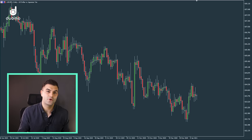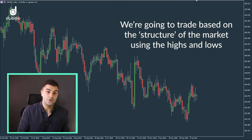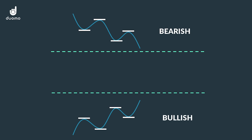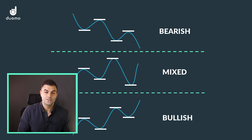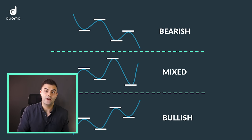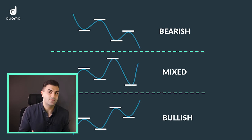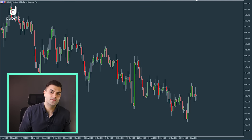So in this simple approach, we're going to trade based on the structure of the market using the highs and lows. If there are lower highs and lower lows, we're in a bearish trend; if there are higher highs and higher lows, we're in a bullish trend. If there's a mix — like a higher high after a lower low or vice versa — we'd be waiting for the next high or low to confirm what direction the structure is going in. So if we're going long, we're making a statement that we believe there will be a bullish trend. If we're going short, we're making a statement that there's a bearish trend that will continue. And if we're closing a position, it's a statement that the chances of that trend ending are high enough that we should no longer be in the trade.